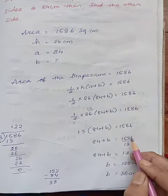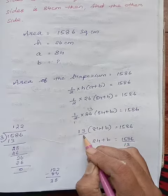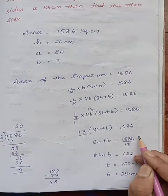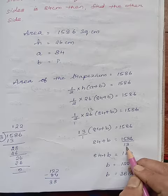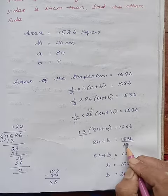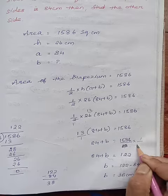First we will take this 13 to another side. 13 means 13/1. When it's taken to the other side, it becomes 1/13. So I have written 1586 divided by 13. Otherwise we can write 13/1 as 1/13.